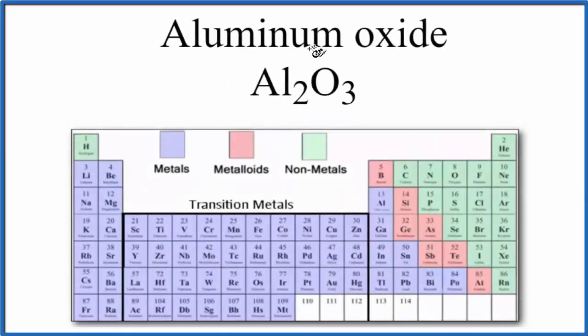In this video, we'll look at whether aluminum oxide, that's Al2O3, is ionic or covalent. And the short answer, this is an ionic compound.